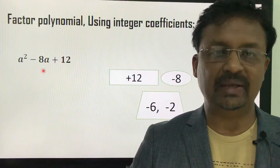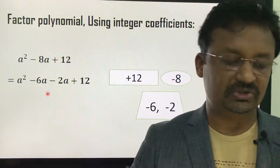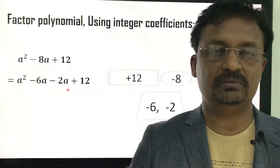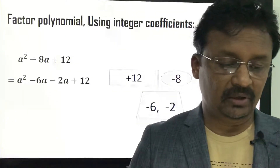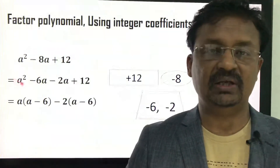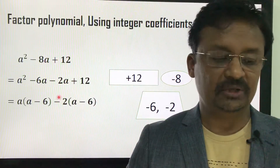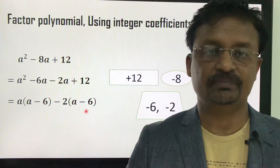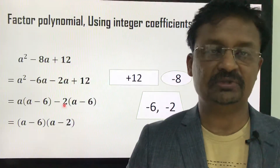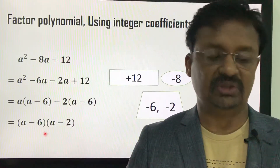Since -6 × -2 = +12 and -6 + (-2) = -8, I replace the middle term -8a with -6a - 2a, giving a² - 6a - 2a + 12. Now I apply the grouping method: from the first two terms, take a as common — remaining is (a - 6). From the third and fourth terms, take -2 as common — remaining is (a - 6). Taking (a - 6) as common factor gives (a - 6)(a - 2). So a² - 8a + 12 = (a - 6)(a - 2).